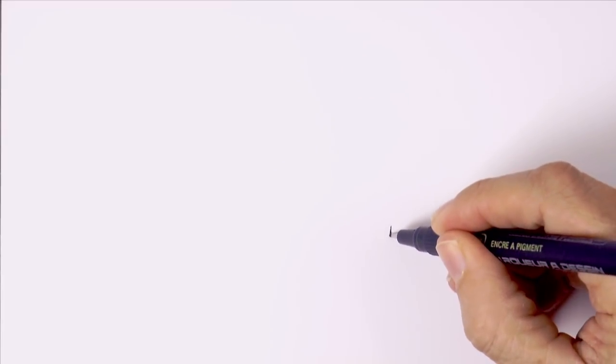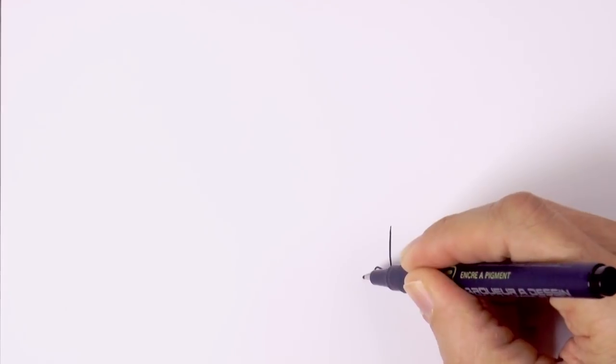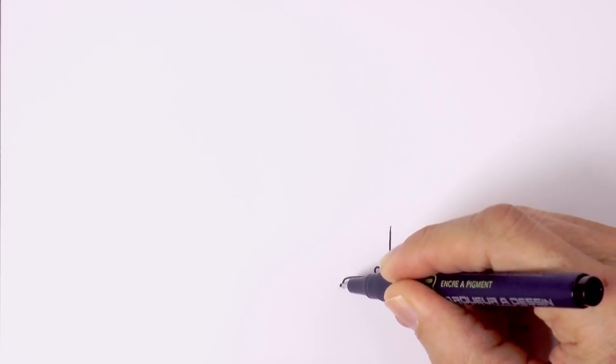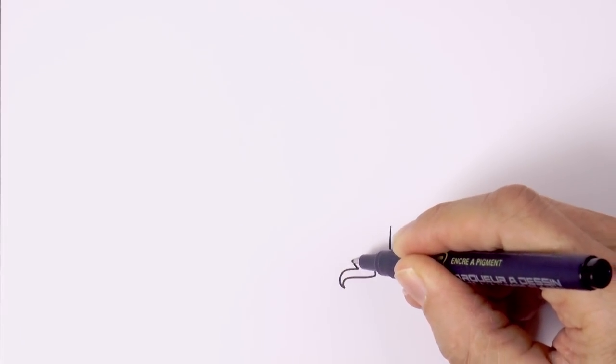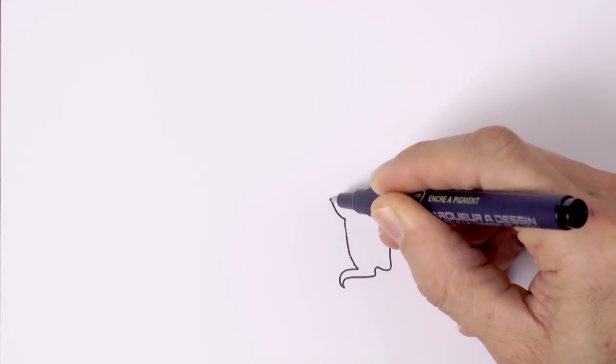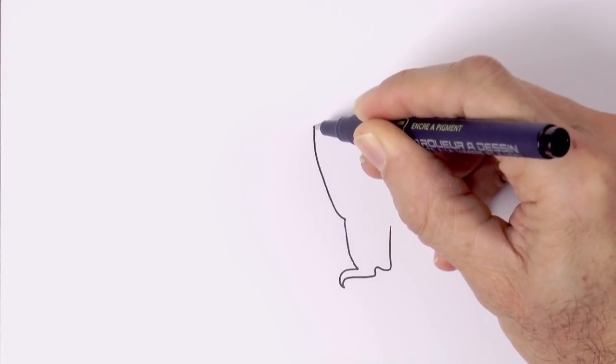And let's draw an eagle now. We begin with the leg, the claws. To make your drawings look nice, it is important that your line is continuous, decisive, not jagged.